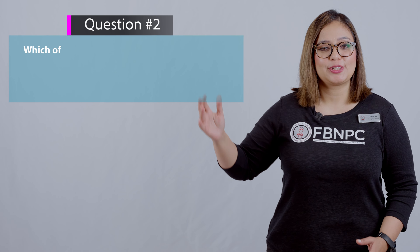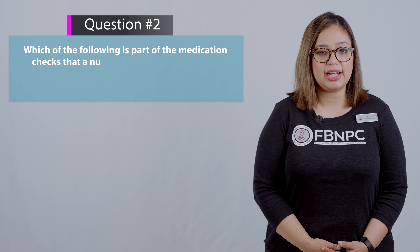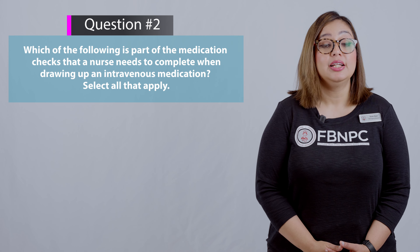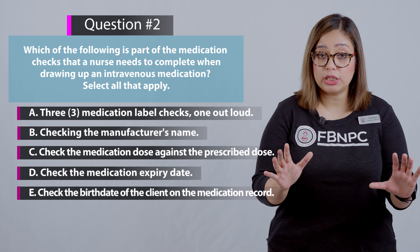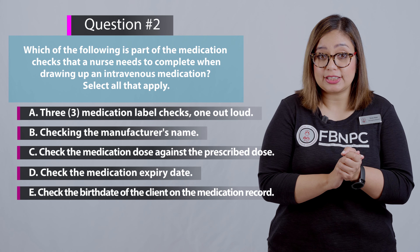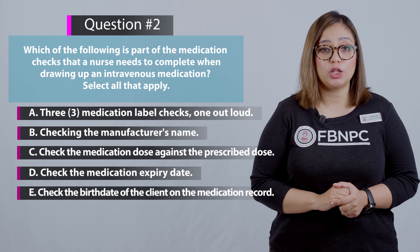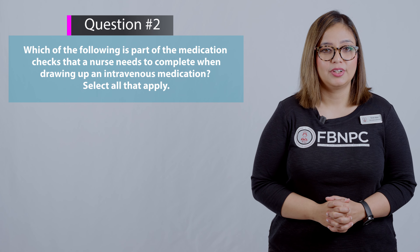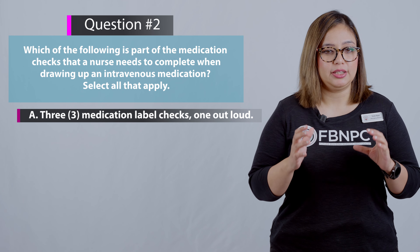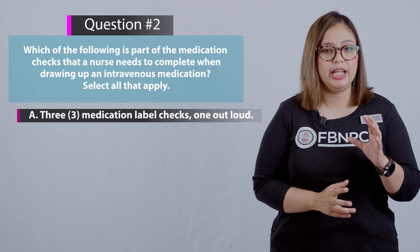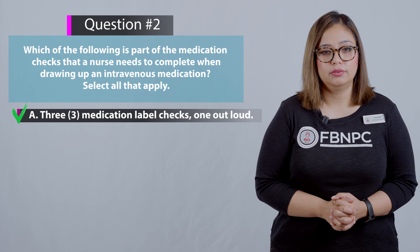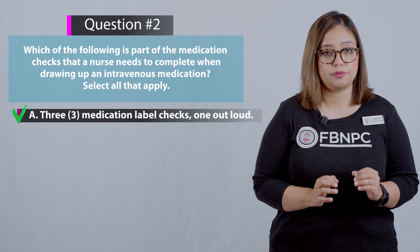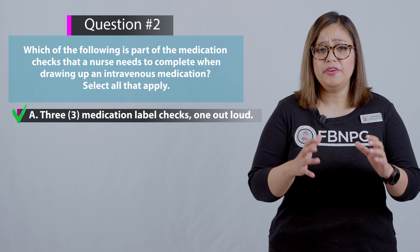Here is the next question: which of the following are part of the medication checks a nurse needs to complete when drawing up an intravenous medication? Select all that apply. Option A — three medication label checks — is correct. Medication must be checked three times to ensure right drug, right dosage, right time, right route, and right patient, as part of the 10 rights of medication administration.